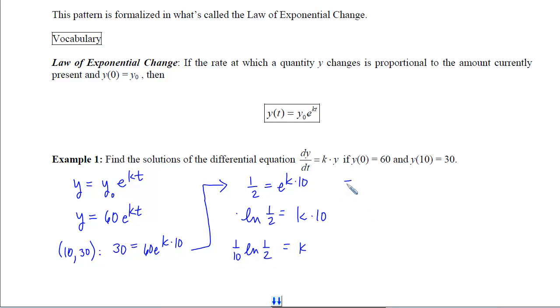That leads me to my final solution, which is y equals 60 e to that k times t. And I would recommend that you put the t out in front as opposed to at the back so that you don't inadvertently think that the t is inside the natural log.